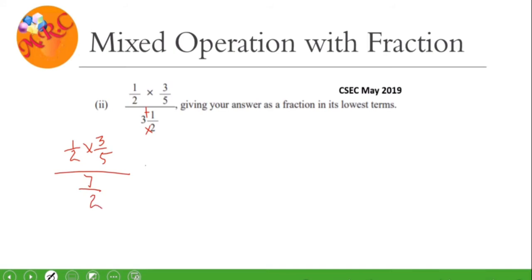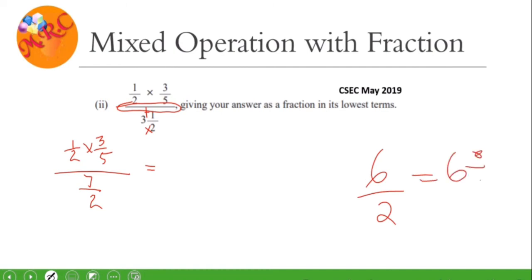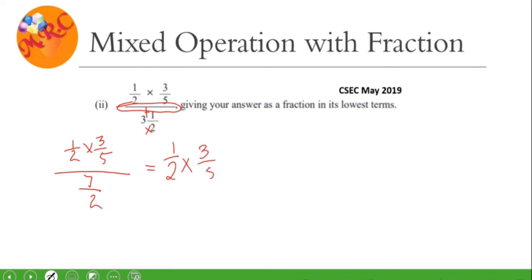Now we're going to rewrite this entire fraction in another form. Where we have this fraction bar, we're going to change that out. You know that a fraction bar actually means division — if you see six over two, it actually means six divided by two. So we're going to change that out. We have one-half times three-fifths, in brackets, divided by seven over two.